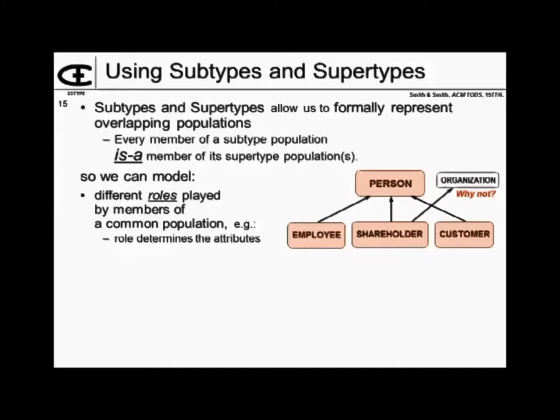Having multiple supertypes violates the fundamental rule of subtyping and supertyping: every member of a subtype population must be in all of its supertype populations. Well, a person and an organization — they're going to be exclusive, aren't they, unless you want to redefine one of them.